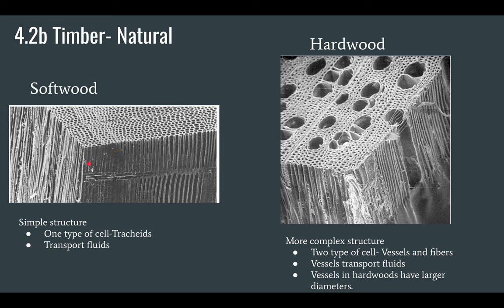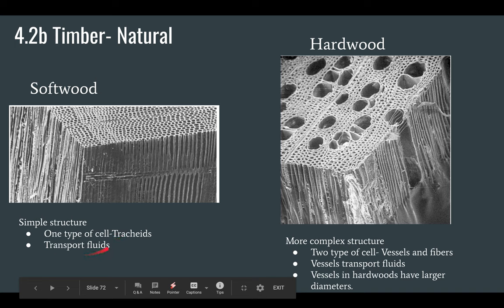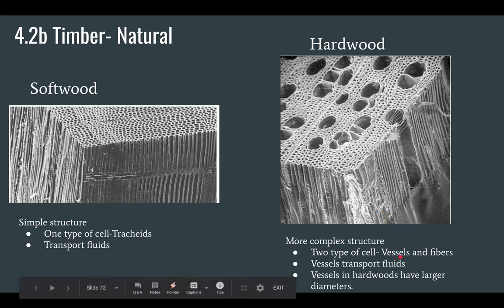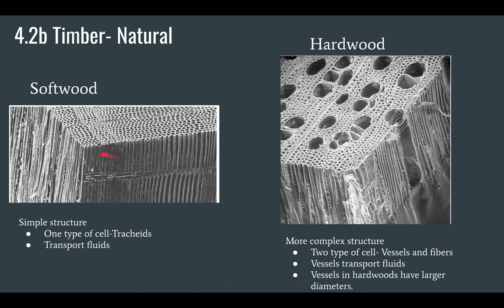Looking at the structure of softwood, you'll see there is one type of cell. This is an electron micrograph of softwood showing just one type of cell called tracheids, which basically transport fluids. Hardwood, by contrast, has two types of cells: vessels and fibers. The vessels — the larger holes — also transport fluids, and they have a larger diameter than those in softwoods. You'll also notice that these grow in layers, which is what gives wood its rings.